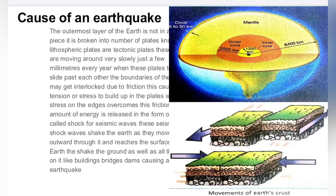These shock waves or seismic waves travel from beneath the earth, from the tectonic plates, towards the surface of the earth. They shake the surface - the ground, bridges, buildings, and dams - creating vibration. This is called an earthquake. In summary, when tectonic plates interlock during their motion and stress or tension develops between them, that force is released as seismic waves, which is the main cause of an earthquake.